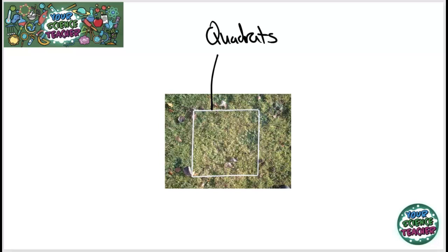And how these quadrats work is we can count the number of different species that are present inside of that quadrat and we can create what is called a frequency table of all the different species present. Now if we know the size of the area we are investigating and we know the size of our quadrat, we can multiply out and estimate the population in a whole field or a whole habitat.